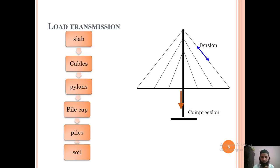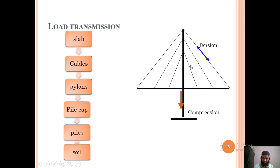The load transmission in a cable-stayed bridge goes from the slab to the cables, from the cables to the pylons, from the pylons to the pile cap, and from the pile cap to the piles and then into the soil. The main tower is in the center; cables hang from it onto the bridge on both sides, creating tension. This load is transferred to the bottom and then from the bottom into the soil.